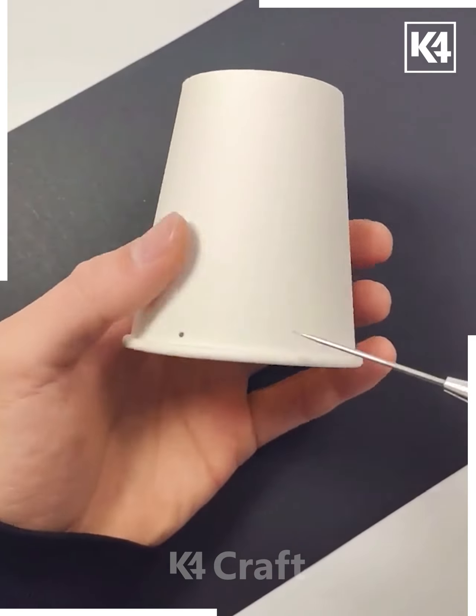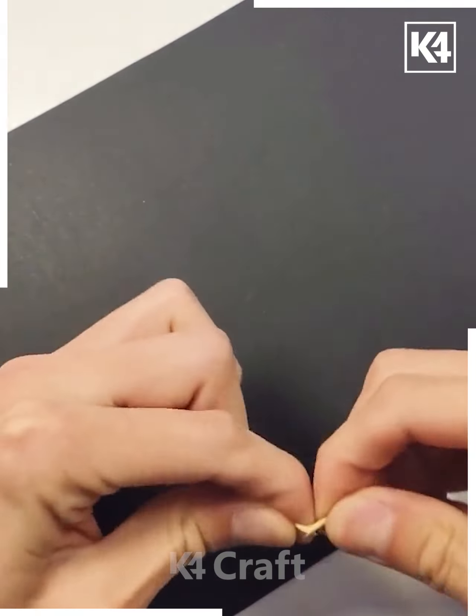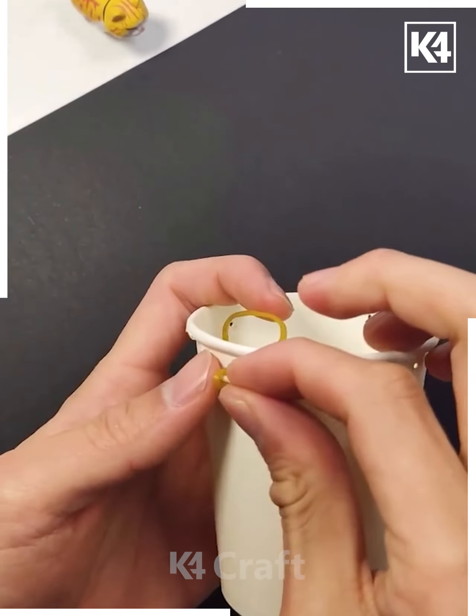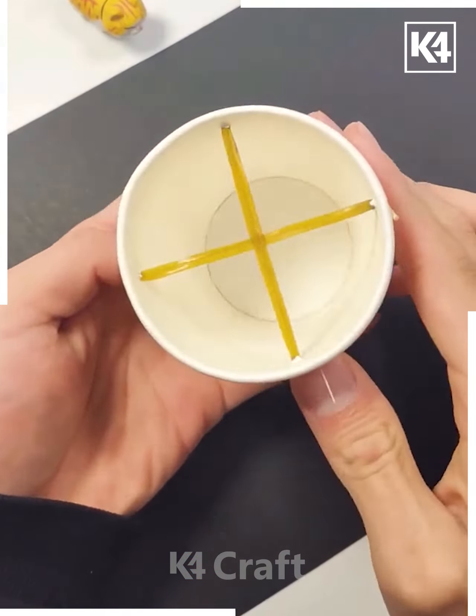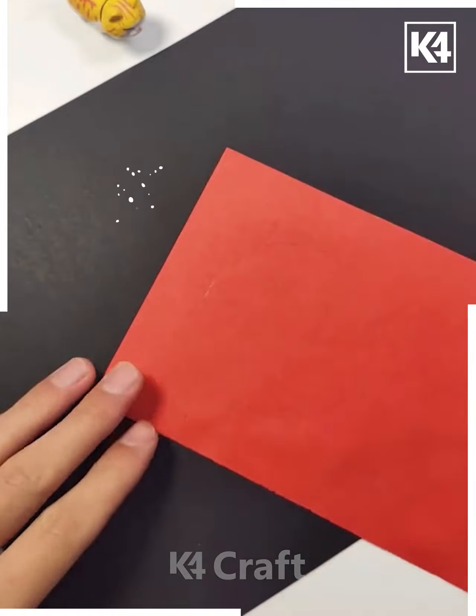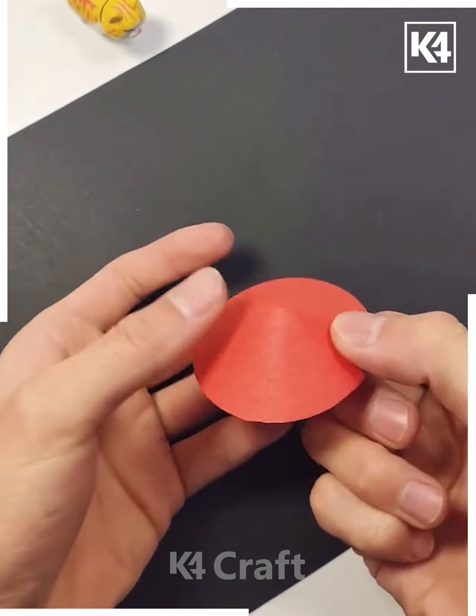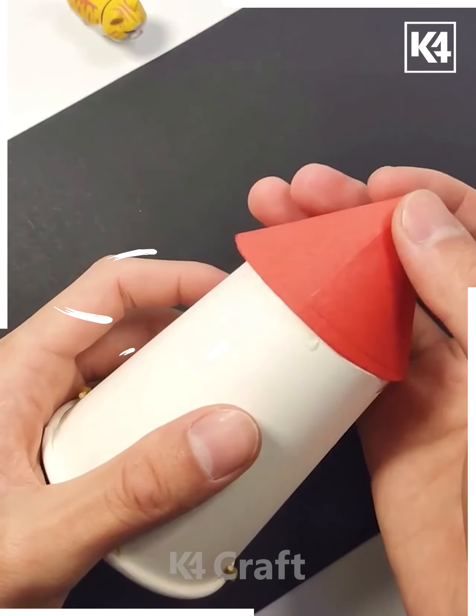Take a paper cup and cut it out as you can see. We are taking some rubber and sticks and making this design. After that we've taken a red cutout in circular shape, pasted it on top, and it's ready.